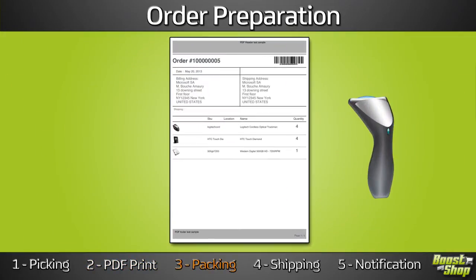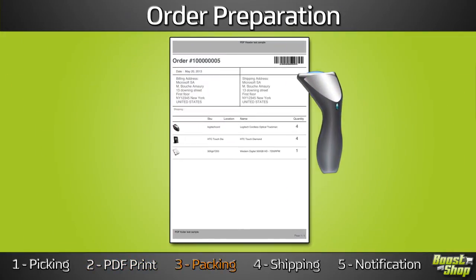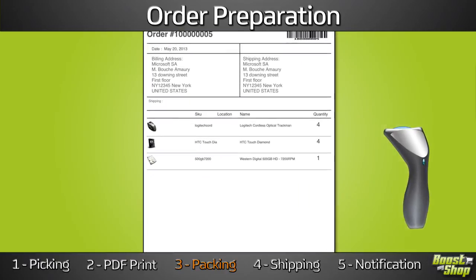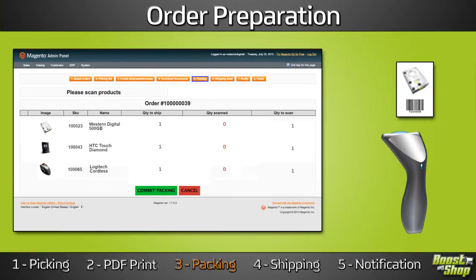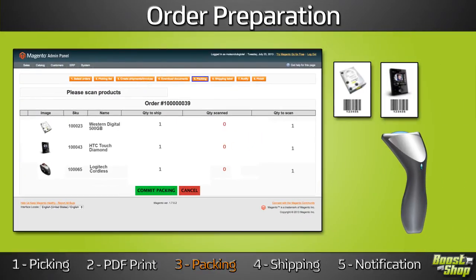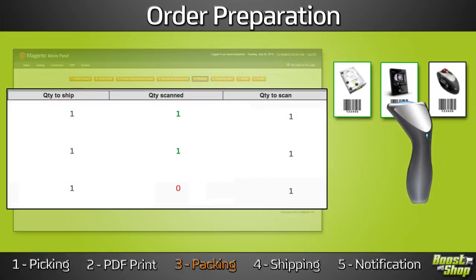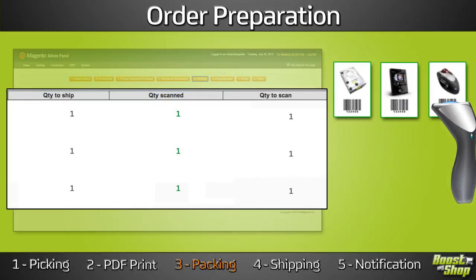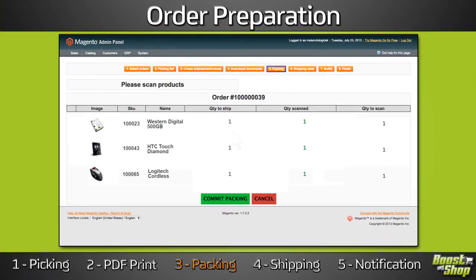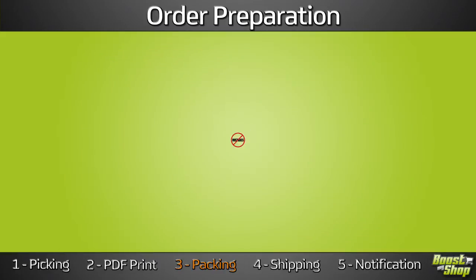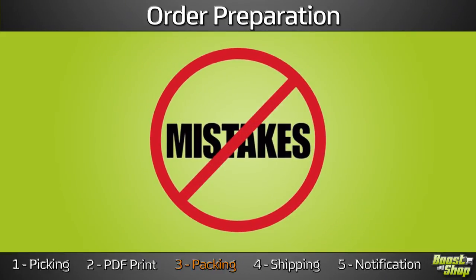Packing. Scanning the order barcode generated by ERP, you access a screen summarizing every product you need to pack the order. You can also enable a product barcode verification to ensure that you're packing the right product. Once you have scanned every correct product, you can continue the process. This is the zero error insurance.